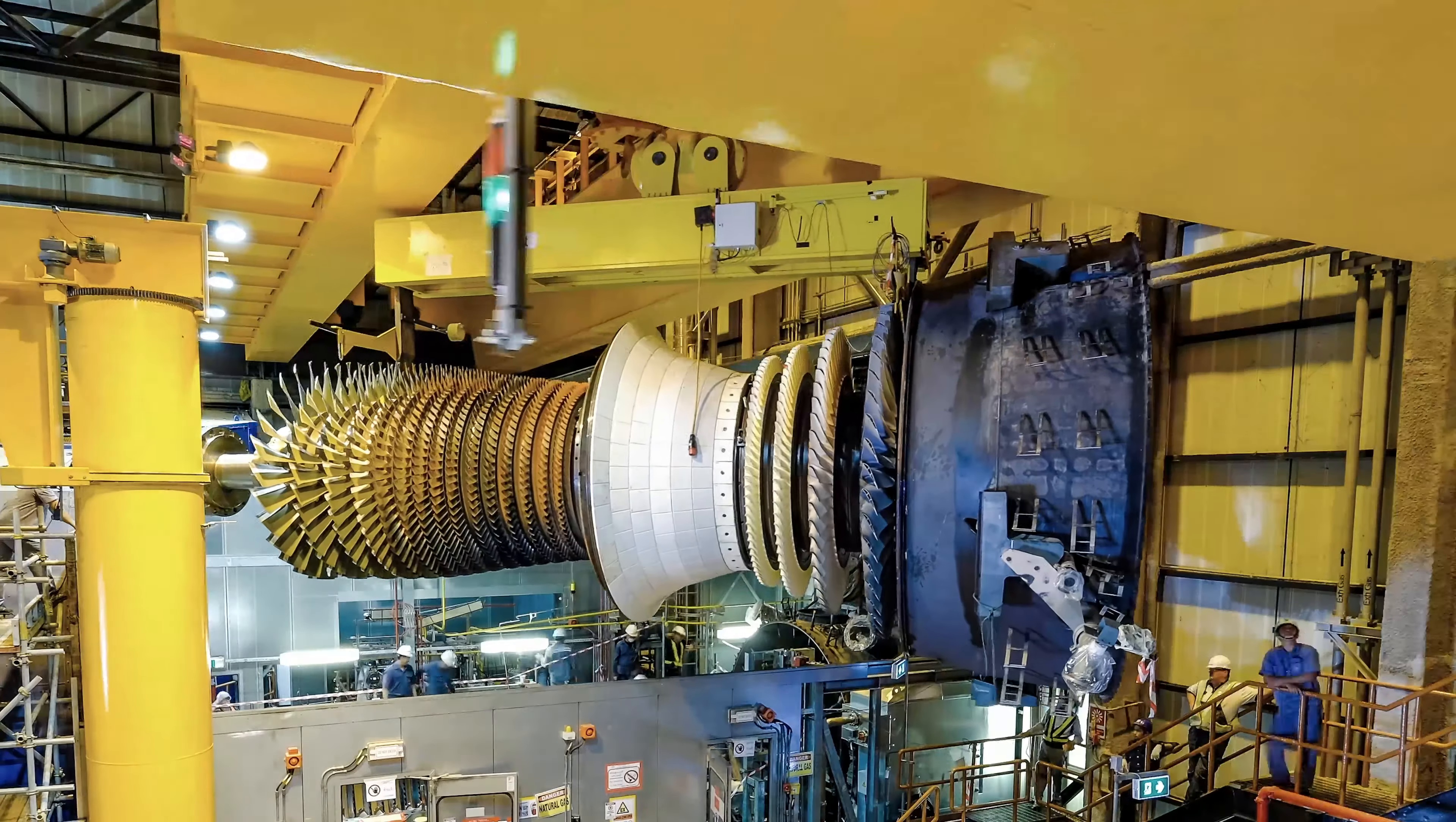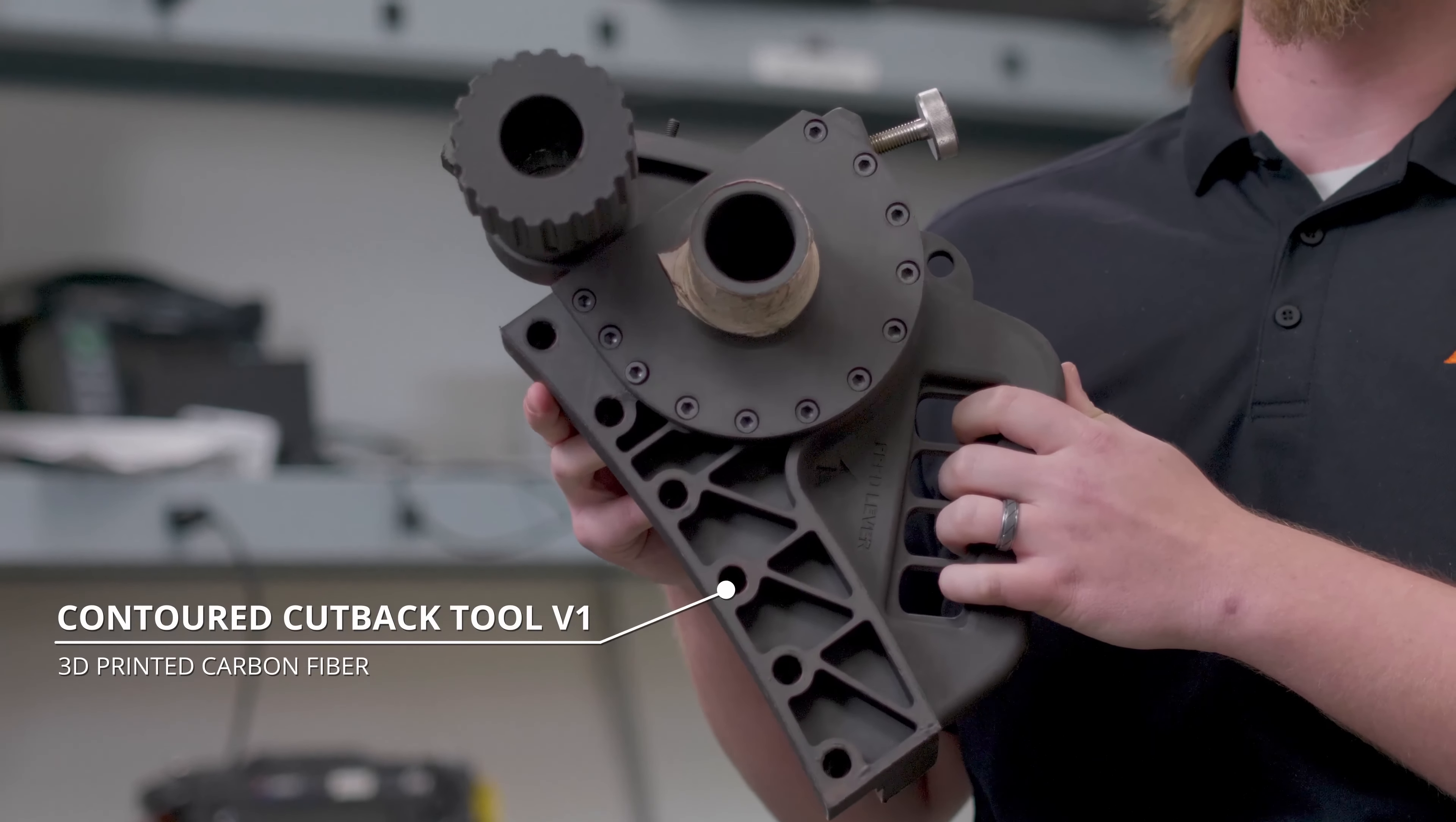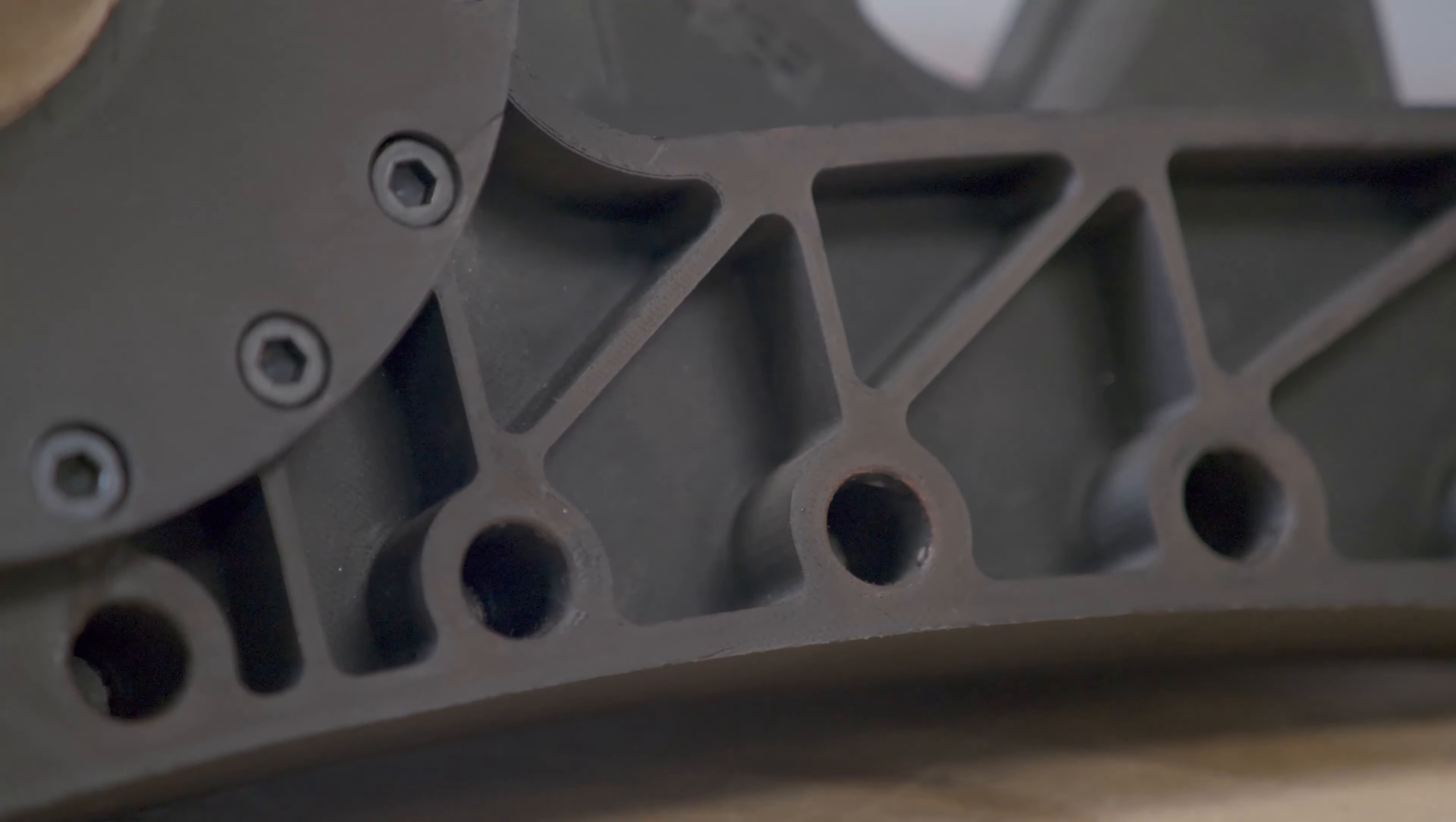So if there's an issue with one of the gas turbines out in the field and it has to go down, that means the lights go out or power has to come from somewhere else. So we developed this contoured cutback tool that allows the technicians to make a precise cut exactly where they need to. So this entire contoured cutback tool has been 3D printed. The only off-the-shelf components we had to use were some screws and the actual pneumatic spindle.